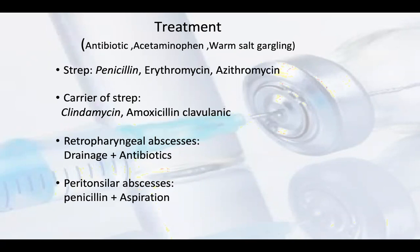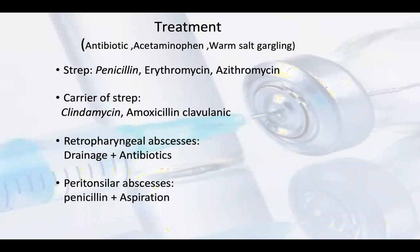For treatment, as a pharmacist you can apply antibiotics, acetaminophen, and warm salt gargle. For Streptococcal pharyngitis, penicillin and erythromycin can be given. Macrolide drugs such as erythromycin are options, though penicillin is less used now and erythromycin is outdated. Mostly clarithromycin and azithromycin are used in these soft tissue infections.